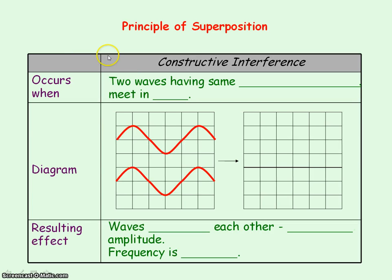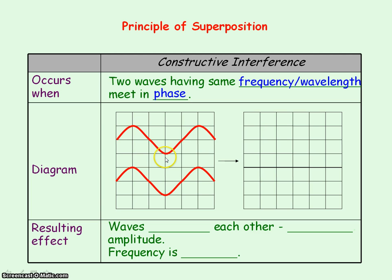A special case of superposition is constructive interference. These are at least two waves of the same type, having the same frequency or wavelength, and they meet in phase. In phase means that the waves are in step with each other, so at the same time the crests of the waves will meet and the troughs of the waves will meet. We'll now apply the principle of superposition at each point along the wave.